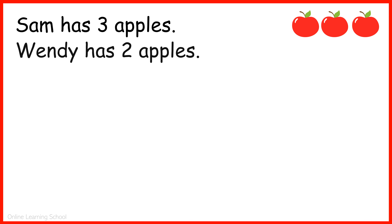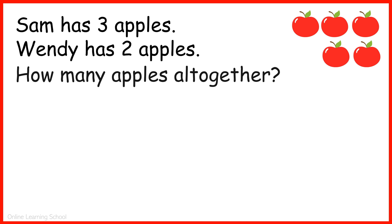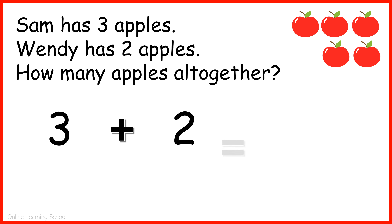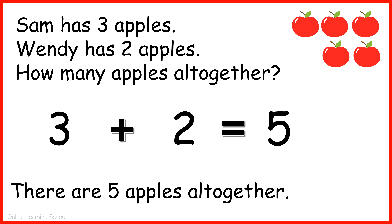Sam has three apples: one, two, three. Wendy has two apples: one, two. How many apples altogether? Three plus two equals five. There are five apples altogether.